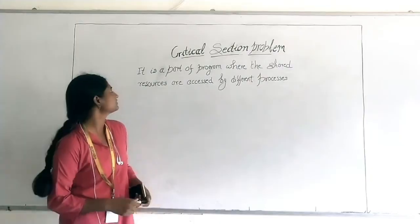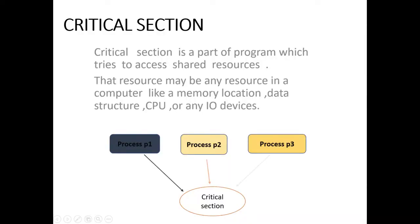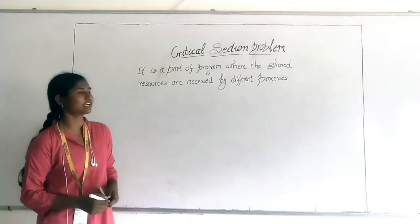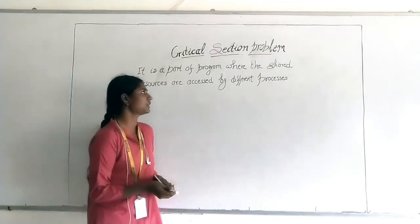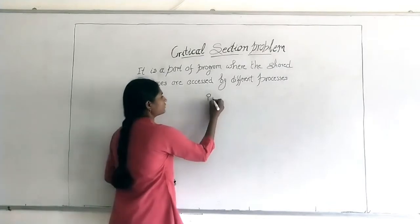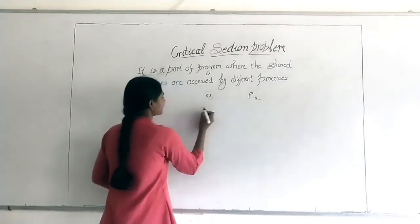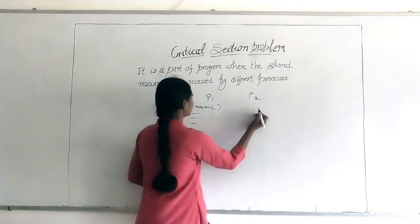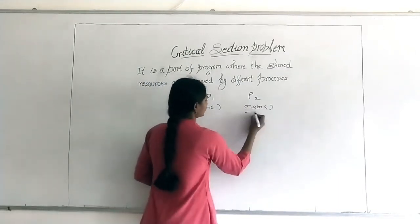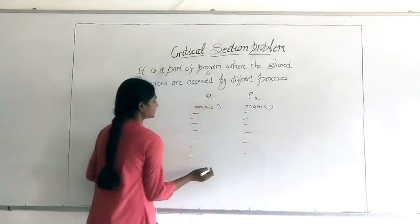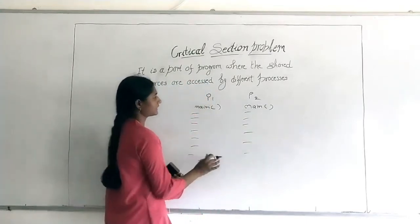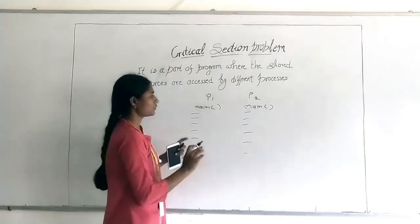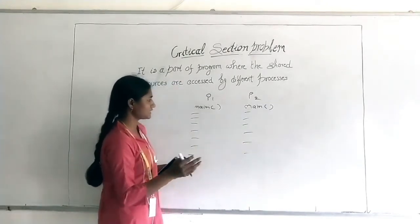What is critical section? It is a part of a program where shared resources are shared by different processes. For example, if we have two processes P1 and P2, each having some instructions written. Some portion will be there where both P1 and P2 contain the same resources.